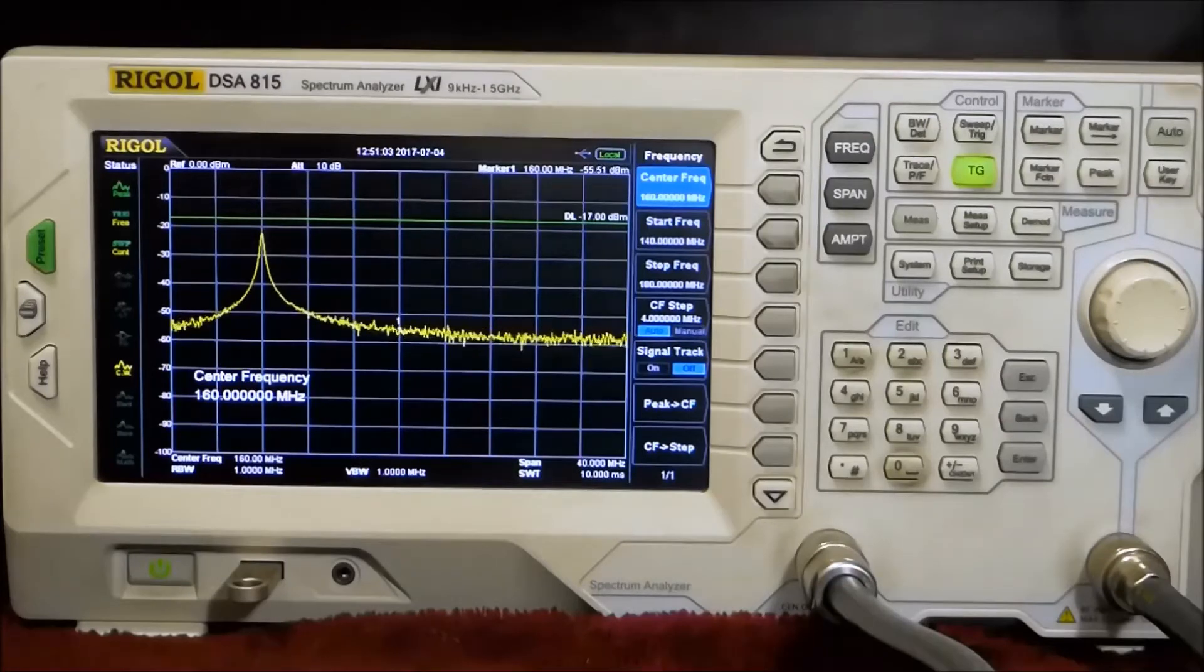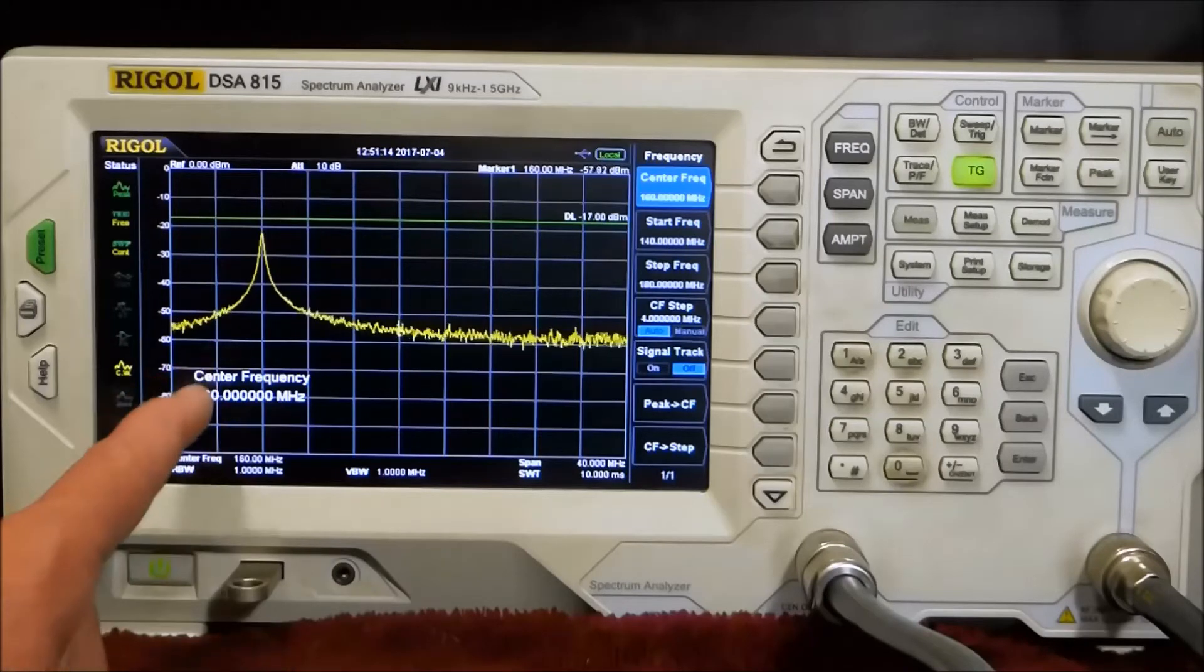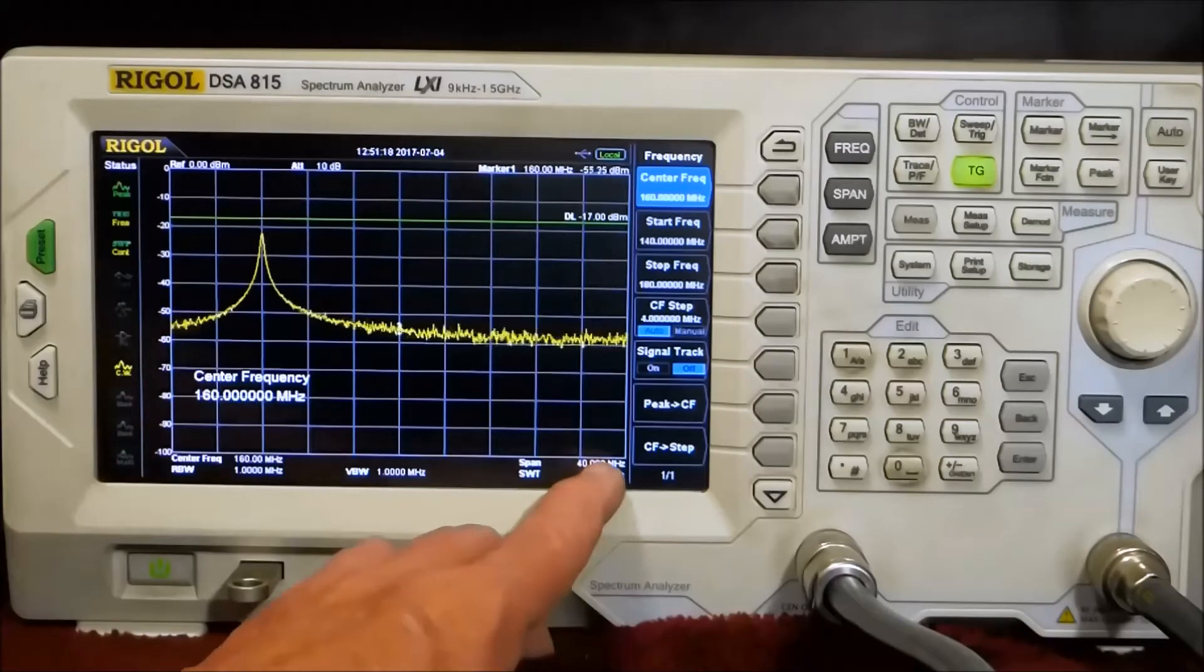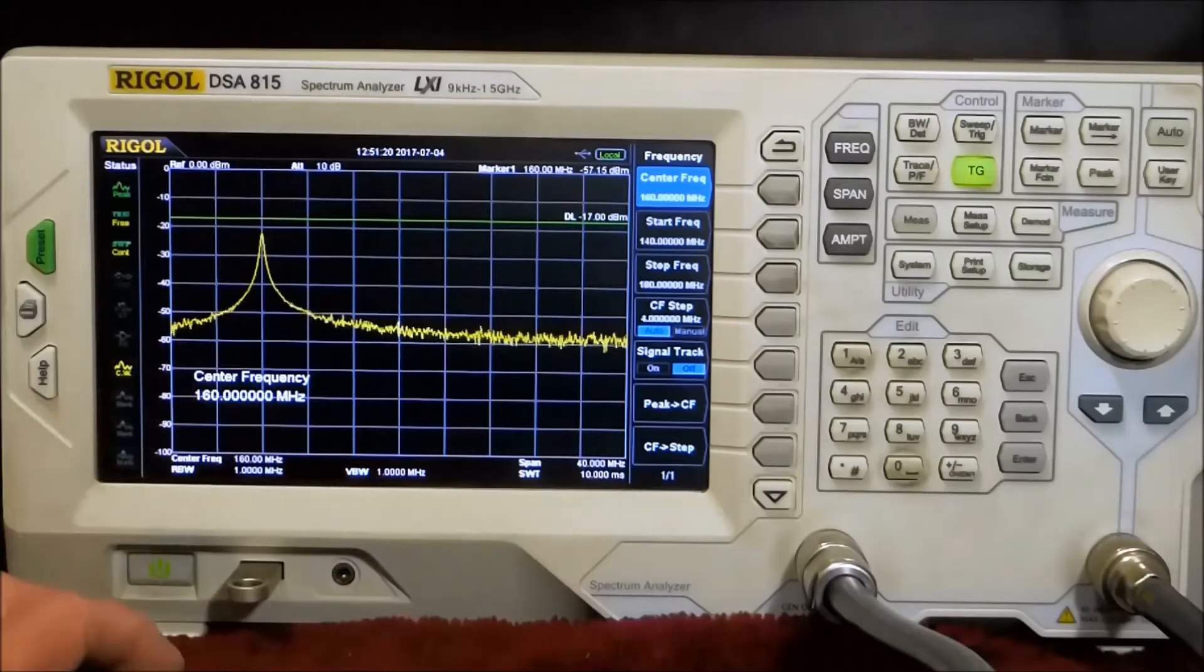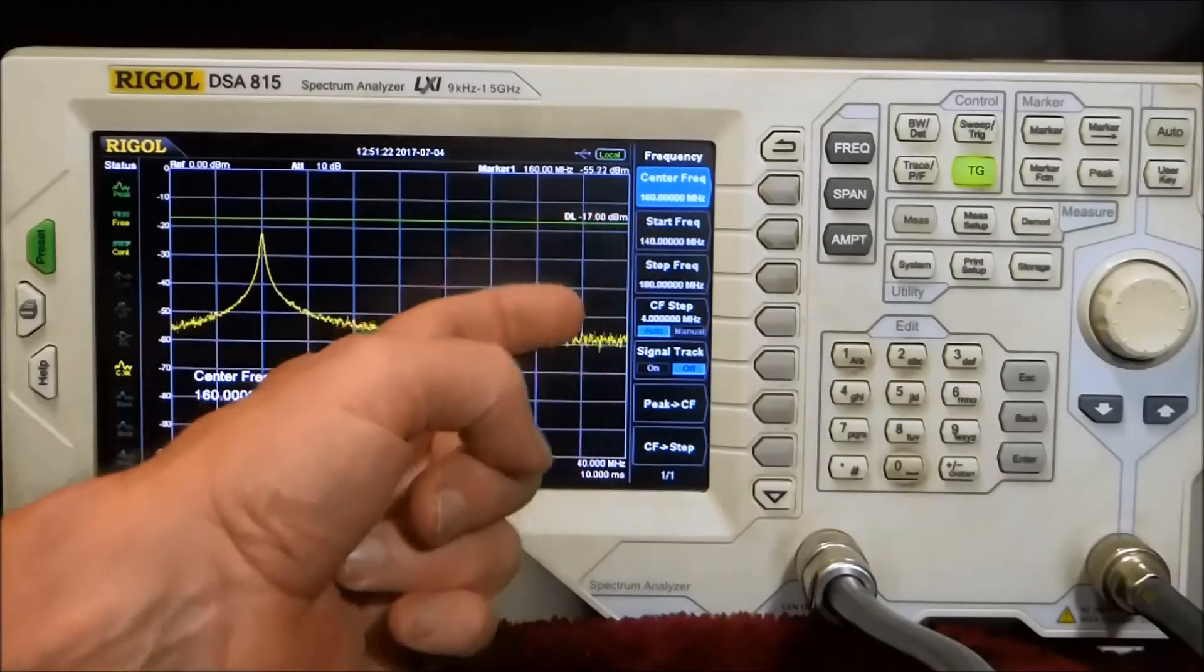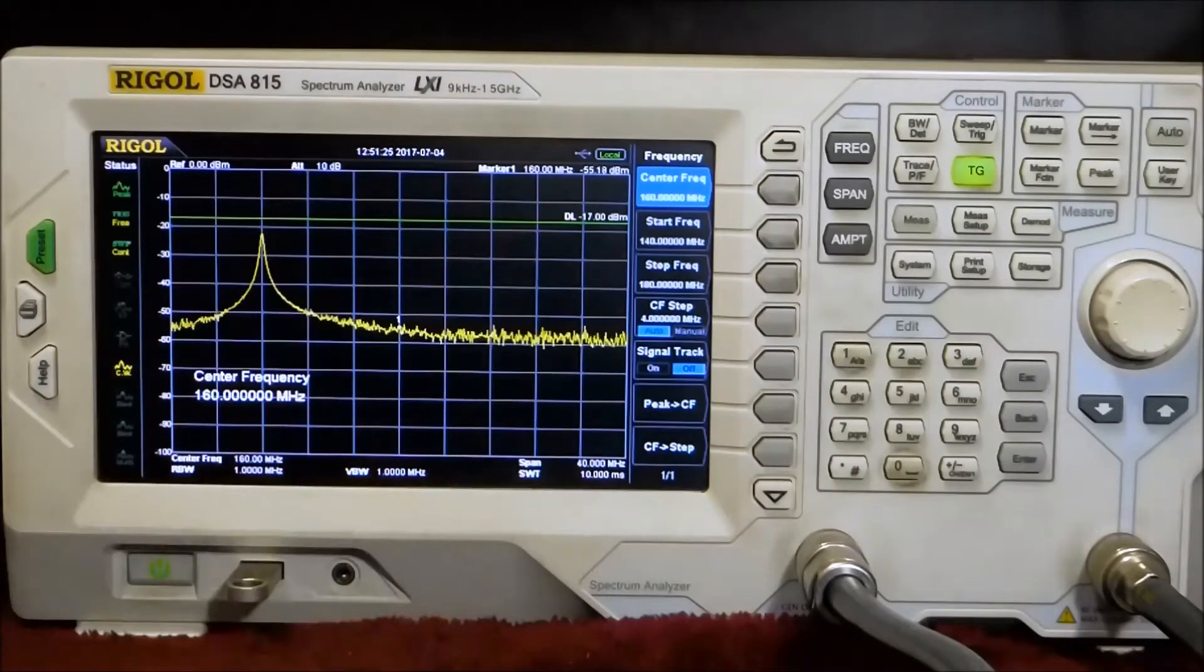The first thing I do when I'm going to tune a new cavity that's already pre-tuned somewhere is I find out where it's tuned. I've set the center frequency at 160 here and the span at 40 megahertz, or alternately you can start at 140 and go to 180.